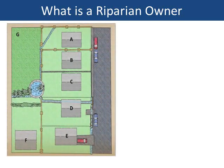We will now explain each element of potential riparian ownership using this picture of six homes that have various watercourses within their land or close by. Unless otherwise shown on the title deeds, all of the landowners in this picture would normally be riparian owners up to the middle of the watercourse.